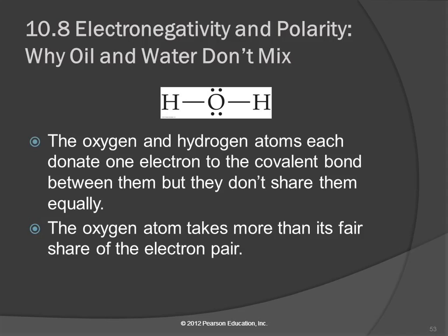If we look at a water molecule, here's a Lewis structure for water. Oxygen has six valence electrons. Each hydrogen has one valence electron. When these bonds form, the hydrogen is sharing one electron with the oxygen and the oxygen is sharing one electron with the hydrogen. But atoms don't always share their electrons equally.